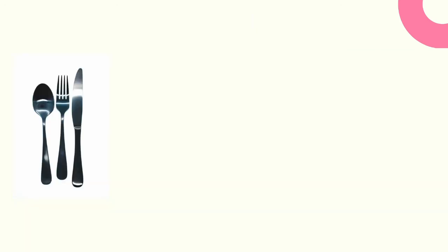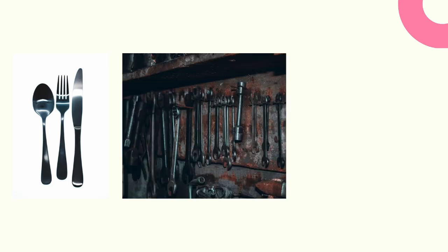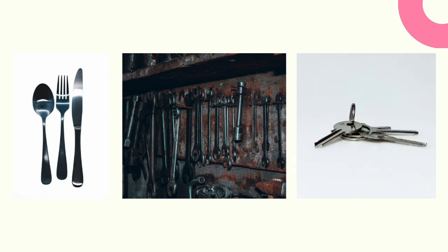What do you see in this picture? A spoon — we call them cutlery. So metal is used to make cutlery and tools. Can you think of anything else that is made from metal?